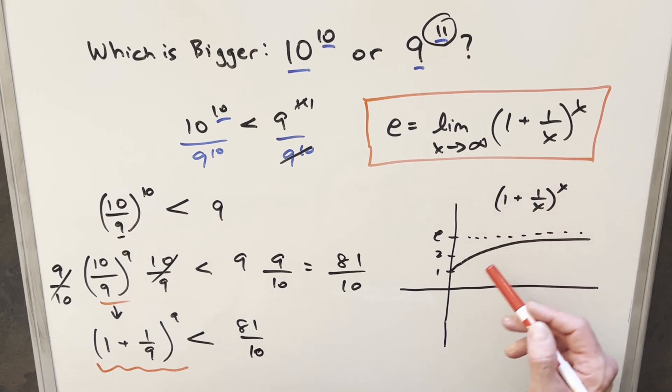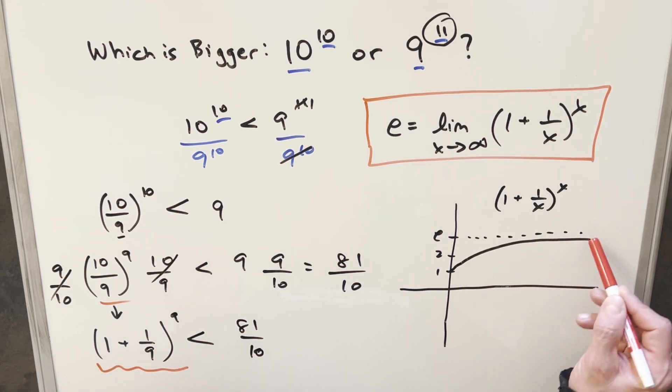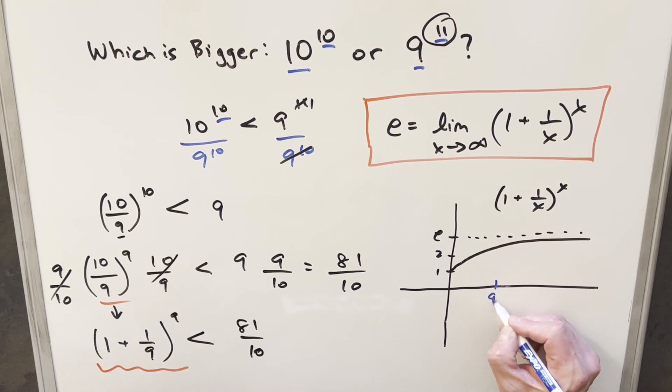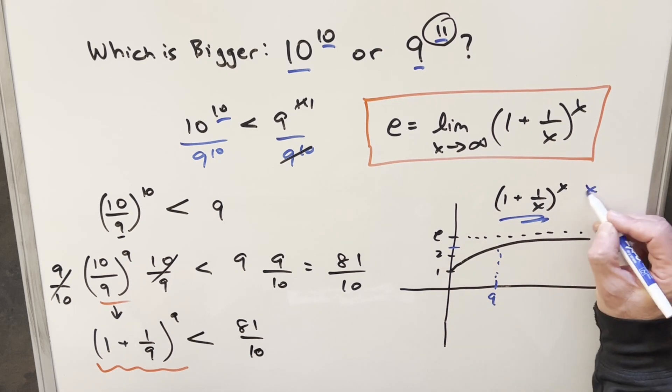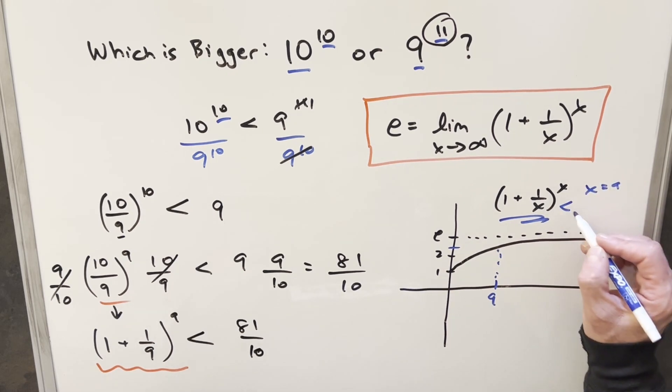Notice this graph is approaching e but never quite reaching e. Let's pretend our 9 is over here. We clearly have some value between 2 and e, but the really important takeaway is that when x equals 9, this thing here is clearly going to be less than e. So let me make some space and we'll come back and continue with this.